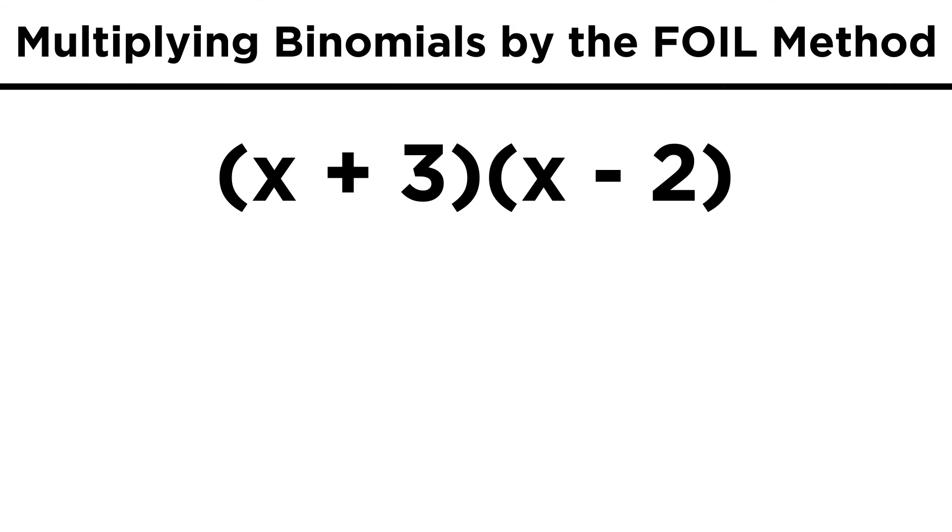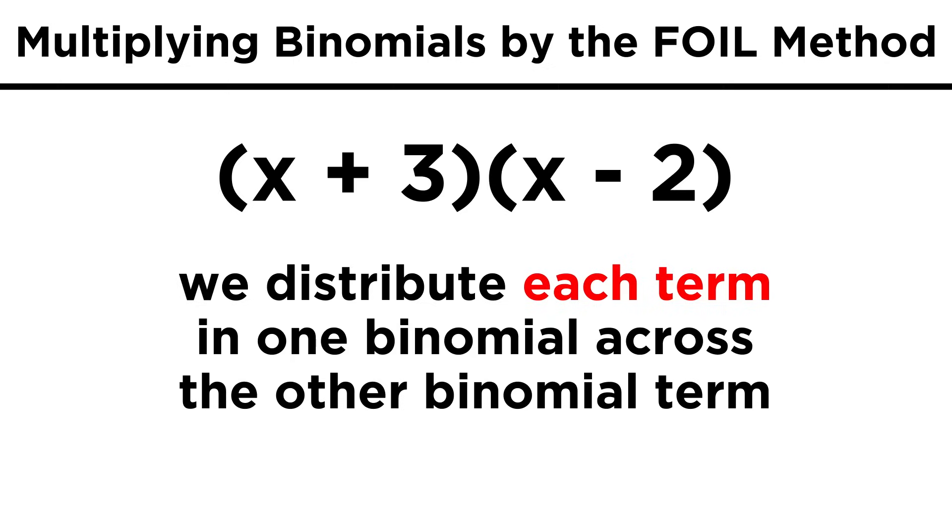But if we want to multiply two binomials, things start to get a little less obvious. Take x plus three times x minus two. What we want to understand is that in order to perform this calculation, we would have to distribute each term in one binomial across the other binomial, essentially using the distributive property twice.